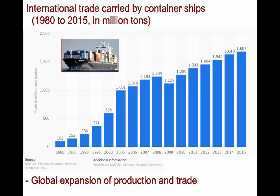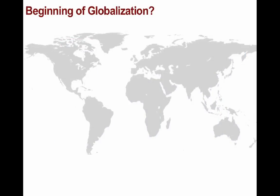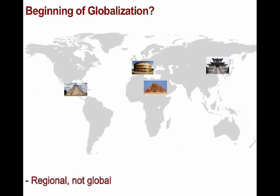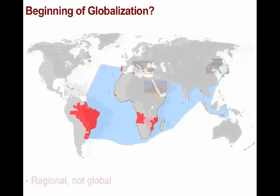But when did this era of globalization actually begin? Major civilizations and empires dominated vast stretches of territory in the past — the Egyptians, the Mayans, the Han Chinese, the Romans, and so on. But these empires were regional in their political reach, dominant in their respective areas for certain, but not truly global in scale.